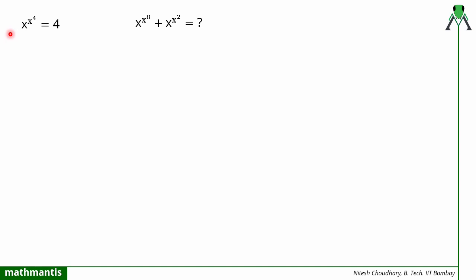Hello everyone, welcome back to my channel Mathematics. In this question we have been given x raised to power x raised to power 4 is equal to 4. We have to find x raised to power x raised to power 8 plus x raised to power x raised to power 2. If you have solved this question wrong and got the answer 18, let me tell you what mathematical mistake you are making.